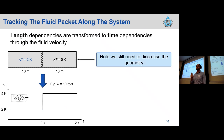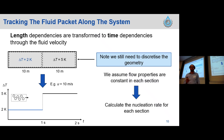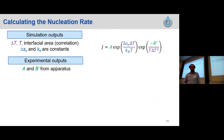One thing to note is that we still need to discretize the actual geometry of the system, because we need to assume flow properties are constant in each section to calculate the nucleation rate.